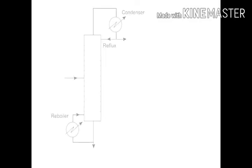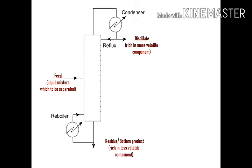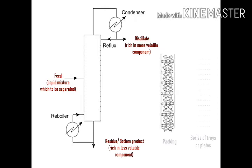Now suppose this is a distillation column. The liquid mixture to be separated is introduced here. The distillate, which is rich in the more volatile component, is withdrawn from the top, and the residue, which is rich in the less volatile component, is removed from the bottom. For better separation, the column consists of a variety of packings or a series of trays or plates.